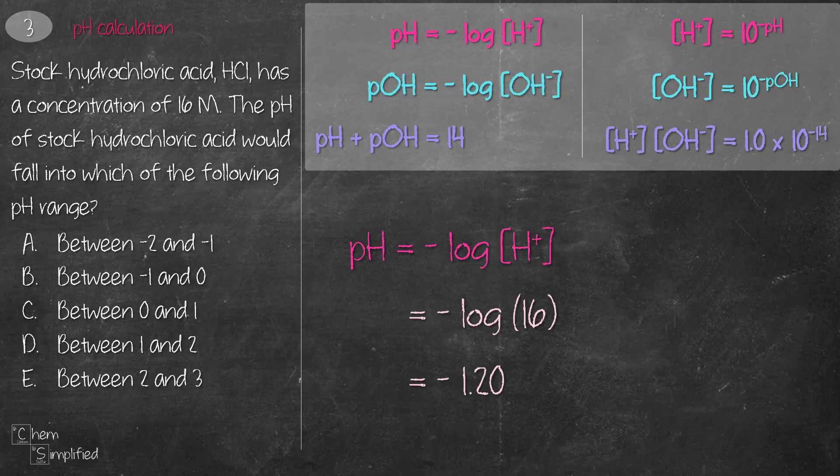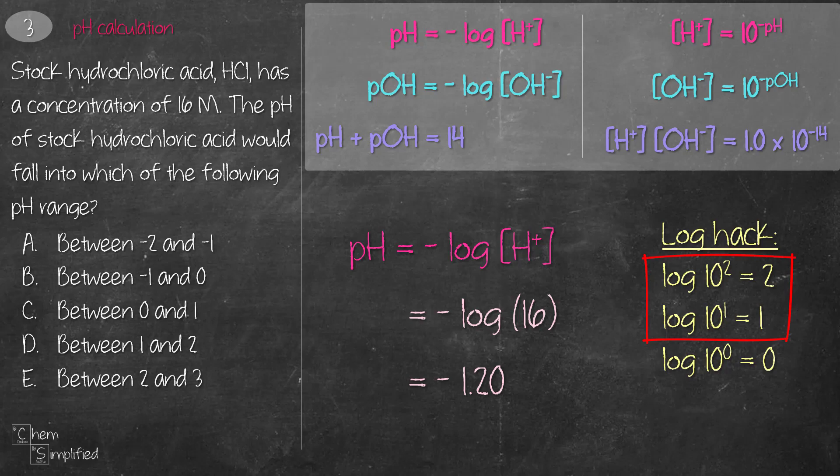If you have no access to the calculator, here's a log hack. Log of 10 to the power of 2 is 2. Log of 10 to the power of 1 is 1. And log 10 to the power of 0, which is log of 1, is 0. So therefore, if we have log of 16, it's between 10 to the power of 1 and 10 to the power of 2. It's between 10 and 100. So therefore, the answer that we expect would be between 1 and 2. And because there's a negative sign in front of it, the estimate is between negative 2 and negative 1.